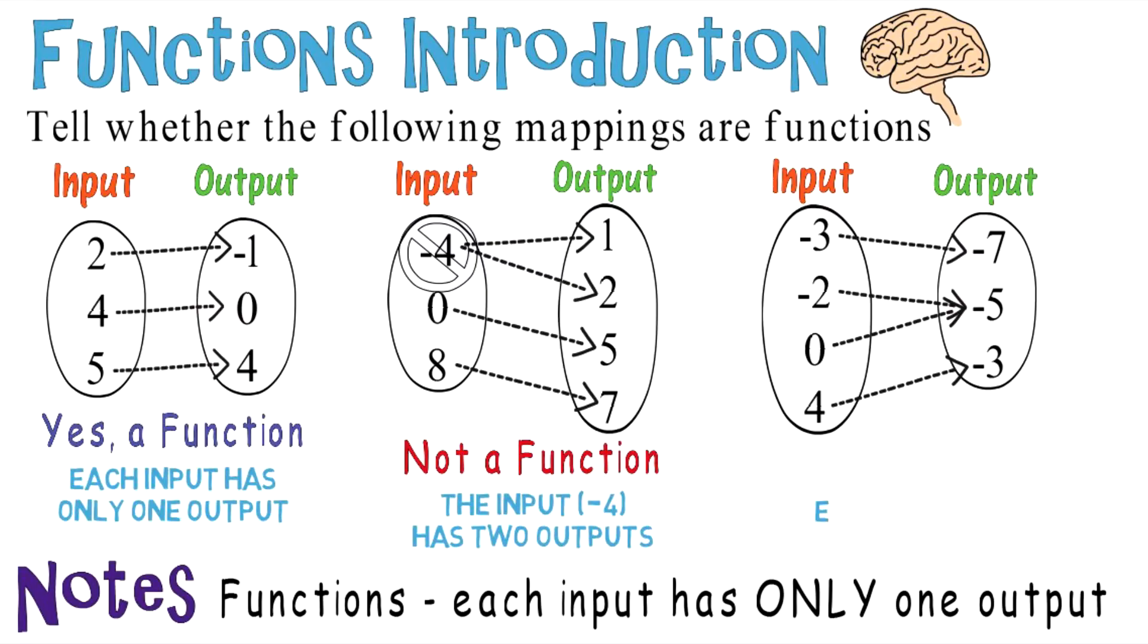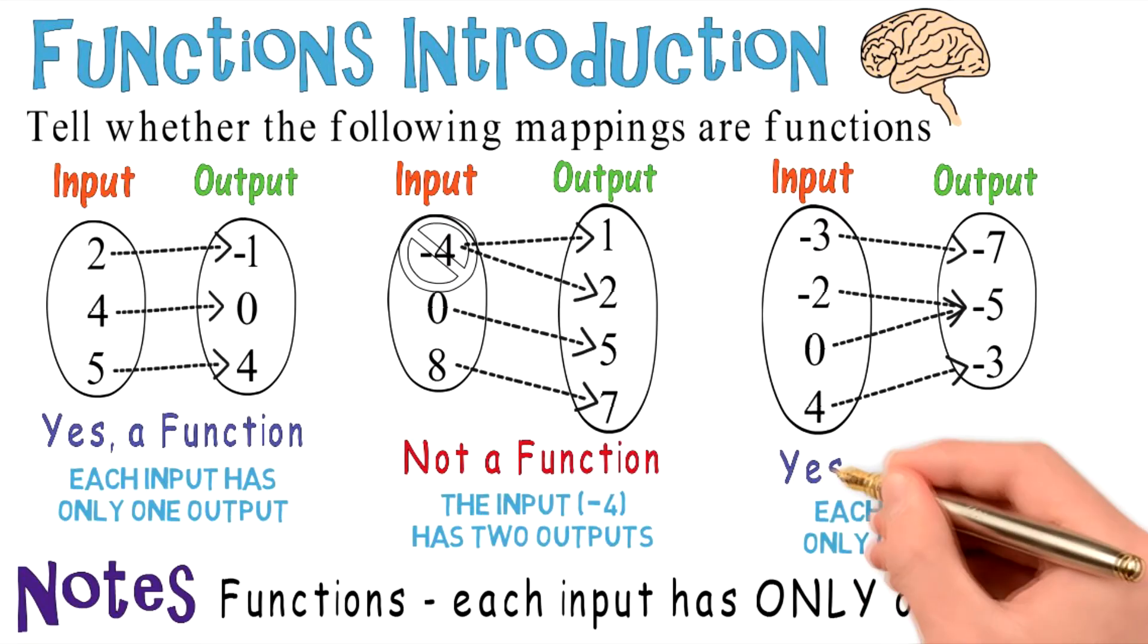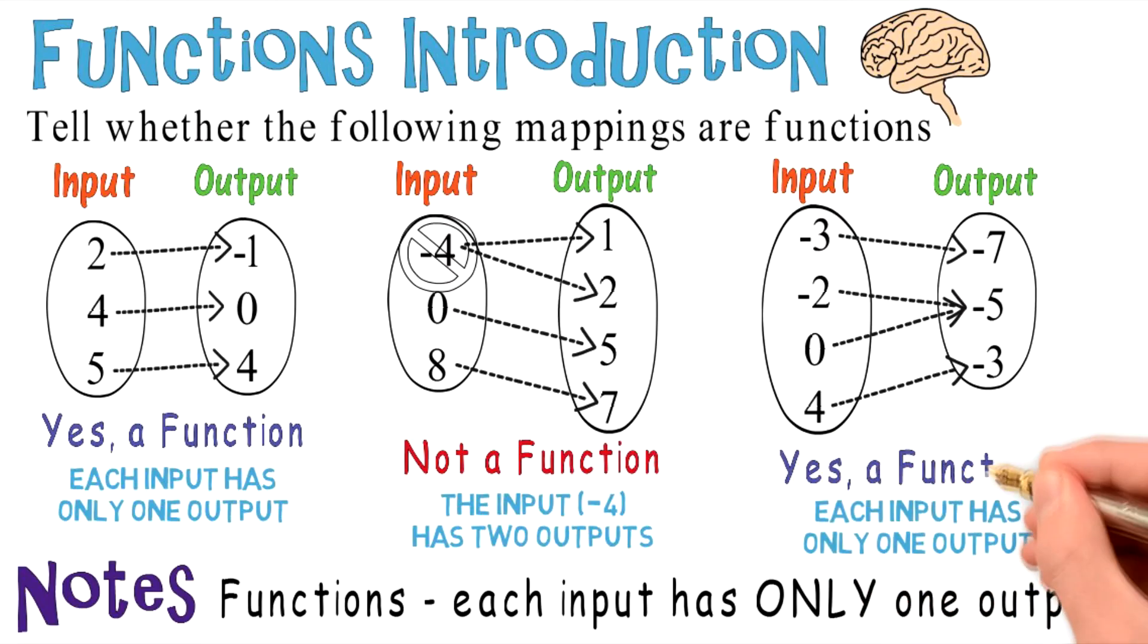Let's take a look here and see what we have. Each input has only one output. Negative 3 goes to negative 7, negative 2 to negative 5, 0 to negative 5, and 4 to negative 3. So you can say yes, this is a function.